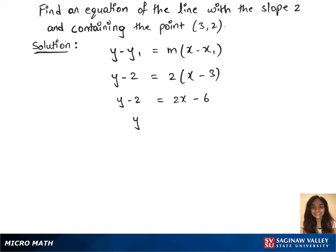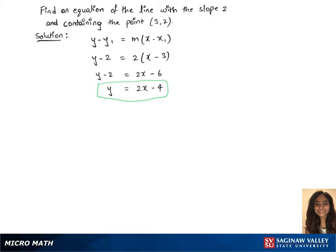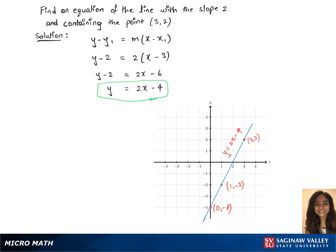In the next step, we'll have y equals 2x minus 4. So that's the equation of the line. And the graph for this equation looks like that.